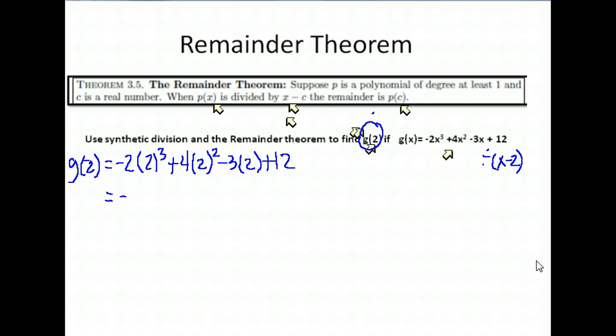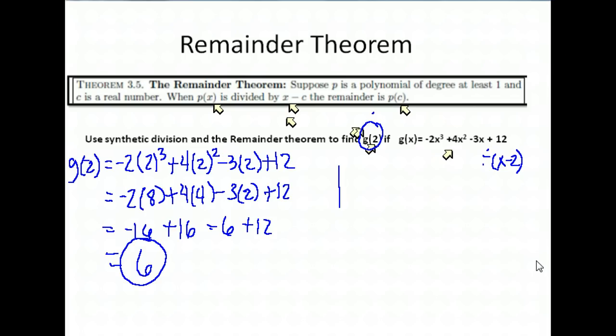2 to the third is 8, so then we have negative 2 times 8 plus 4 times 4 minus 3 times 2 plus 12 gives us negative 16 plus 16, this is what we're used to doing, minus 6 plus 12, which gives us 6. All right, let's try synthetic division and see if they're saying that the remainder using synthetic division and x minus 2, the remainder should be 6. They're saying that will give us a little shortcut so we don't have to plug the number in.